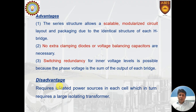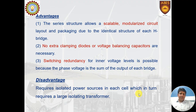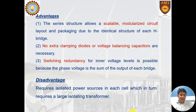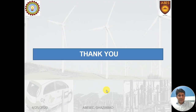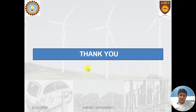The only disadvantage of the cascaded H-bridge topology is that it requires isolated power sources, which also necessitates large isolating transformers, adding to cost. This concludes the discussion of the three topologies of multi-level inverters.